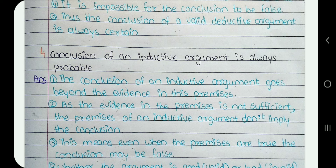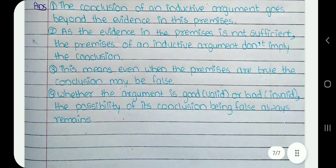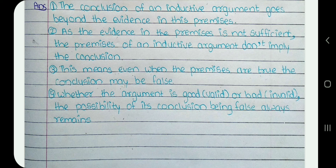4. Conclusion of an inductive argument is always probable. The conclusion of an inductive argument goes beyond the evidence in the premises. As the evidence in the premises is not sufficient, the premises of an inductive argument don't imply the conclusion. This means even when the premises are true, the conclusion may be false. Whether the argument is good or bad, the possibility of its conclusion being false always remains.